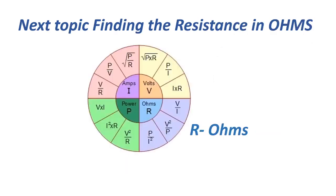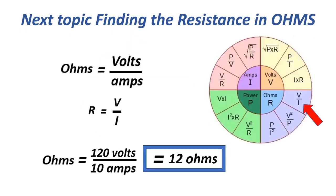The next topic is finding the resistance in ohms. Ohms equals volts over amps, or R equals V over I, equals 120 volts over 10 amps.